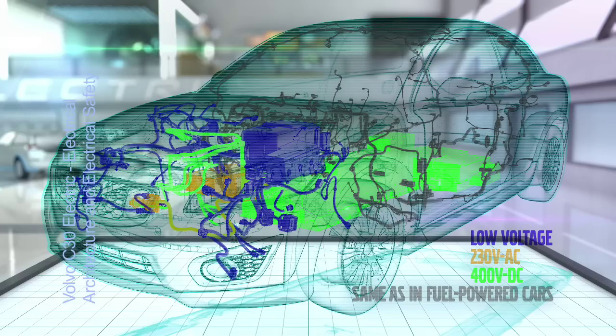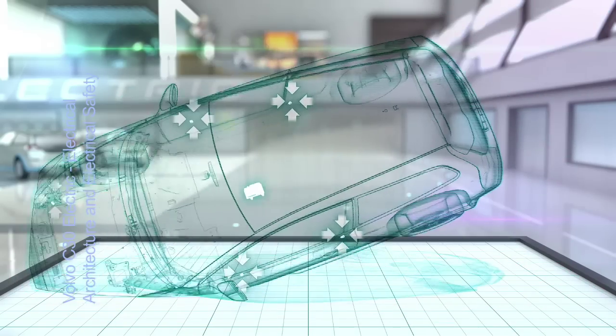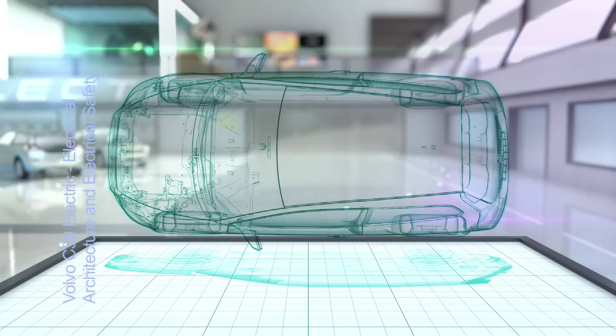In a crash, the Volvo C30 Electric uses the same six sensors, two in the front, two in the doors, two in the B pillars and a system that activates the car's airbags, to switch off the 400 volt system in the event of a frontal, rear end or side impact.